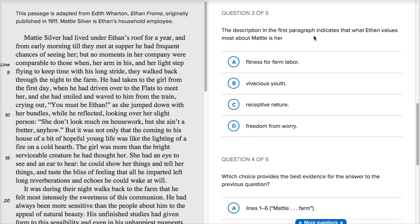The description in the first paragraph indicates that what Ethan values most about Maddie is her. Fitness for farm labor, no, in fact, he says right over here, she don't look much on housework, so it's not gonna be that. Vivacious youth, that's possible. I mean, she is this kind of youthful spirit that's entered into his life. Receptive nature, freedom from worry. So the receptive nature is interesting too, because he talks in the whole passage about how open she is about learning about the stars and about geology and whatever else. Well, let's just see.